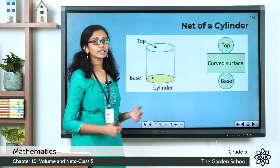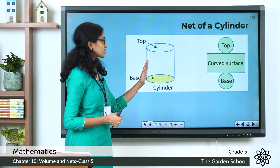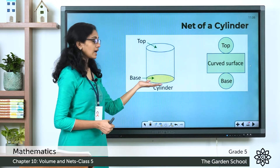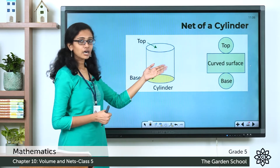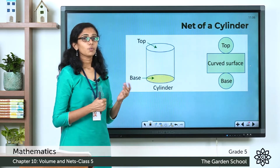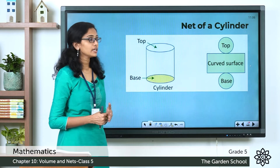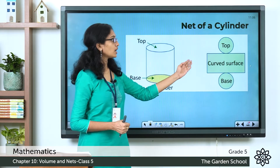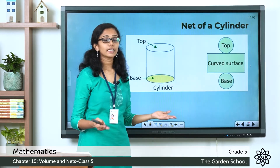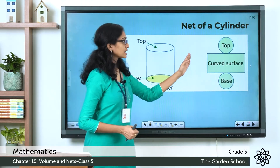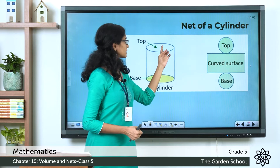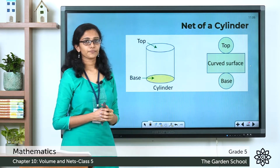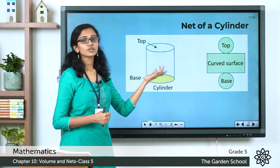Now we'll see the net of a cylinder. A cylinder is a 3D shape which has got a curved face and also two flat faces — one at the top and one at the bottom. If you cut open the cylinder and lay it out flat, you'll get a net like this. Notice how the curved face has changed to a rectangle when you cut it open and lay it out flat. The top and the base of the cylinder are represented as circles in the net. This is how the net of a cylinder looks.